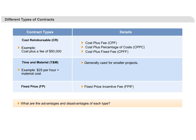Cost-based contracts can be further classified under various other categories as well. Either it can be cost-plus a fixed fee, or it could be cost-plus a percentage of cost.